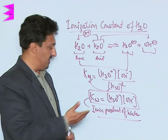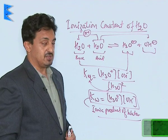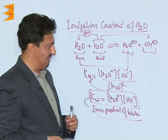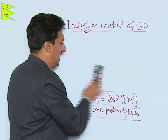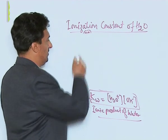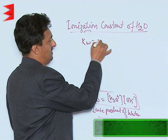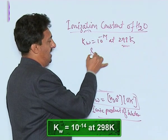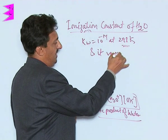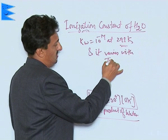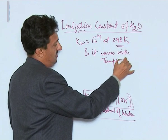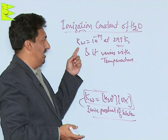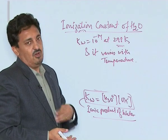This Kw, called the ionic product of water, has a constant value at room temperature, which is 298 Kelvin. The value of Kw is 10⁻¹⁴ at 298 Kelvin. It varies with temperature like any other equilibrium constant, since its value depends only on temperature.